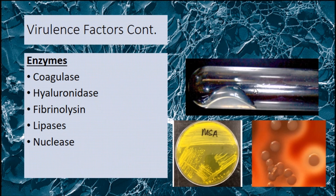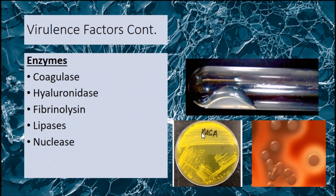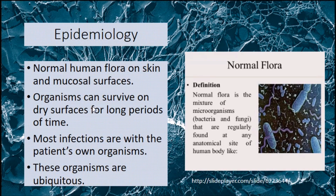Here are some examples. This is the coagulase test. This is the beta hemolysis from the previous slide — you can see the clearing. A neat lab trick: if you have a beta hemolysis bacteria, you can hold the plate up to the light and actually see through it. This is also an MSA plate. Notice the yellow color, which indicates a positive for acid production and growth.